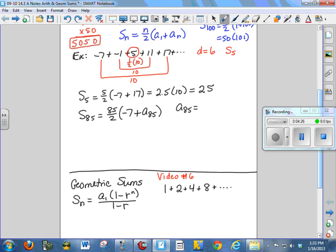We know that A sub 85 is the first term, negative 7, plus 84 times the common difference, D, 84 times 6. Well, that turns out to be 497. So I can merely take 497, substitute in here, and I have this is equal to 85 over 2 times negative 7 plus 497, and that turns out to be 20,825. So take what you know, plug it in.